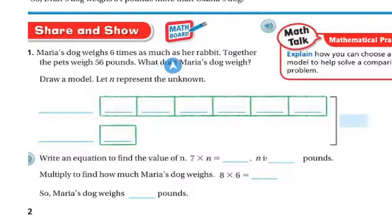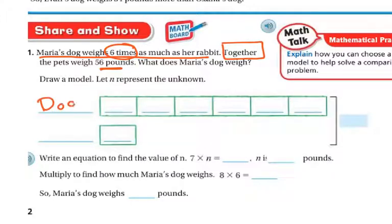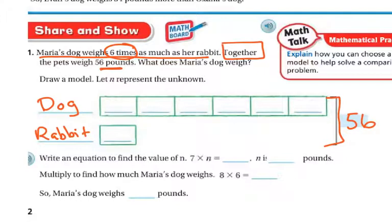Share and show. Maria's dog weighs six times as much as her rabbit, but together the pets weigh 56 pounds. What does Maria's dog weigh? Let's draw a model and let N represent the unknown. We know the dog weighs six times as much as the rabbit, so the dog section has six N's — one, two, three, four, five, six — and the rabbit is one N. Together they weigh 56 pounds, and we don't know how much the rabbit weighs, so rabbit's weight is N.